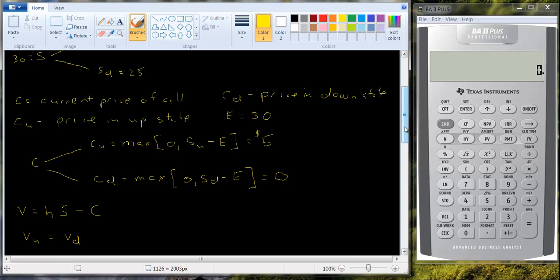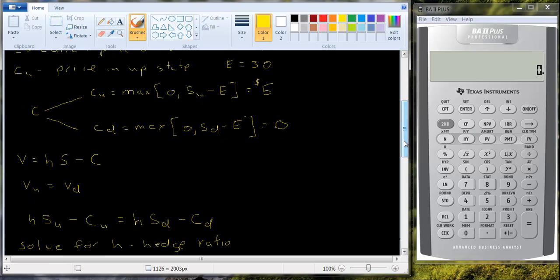And what we talked about at the end was because these two assets, the call option and the stock move exactly in opposite directions, you can create a hedged portfolio by buying shares of stock and selling or writing call options. And if you choose H correctly, we call this the hedge ratio, that's the number of shares of stock to buy for every call option you write, we can create a riskless portfolio. That is, the value of our portfolio in the up state equals the value in the down state.